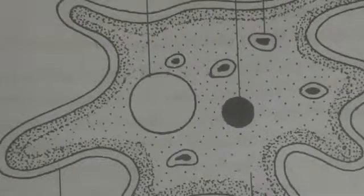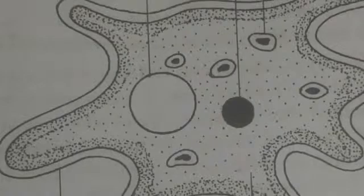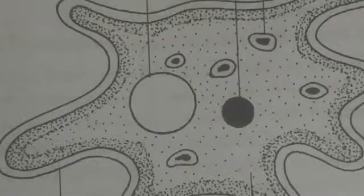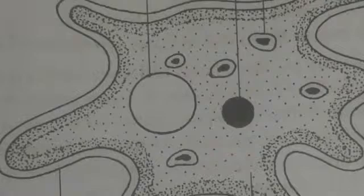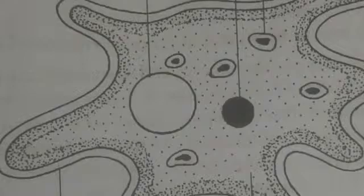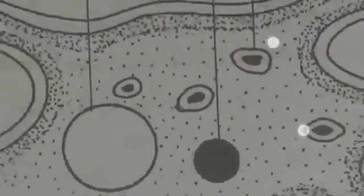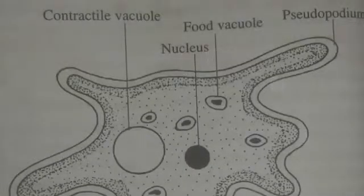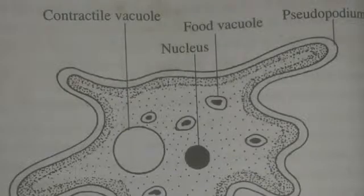The endoplasm contains a biconvex nucleus, endoplasmic reticulum, mitochondria, ribosomes, Golgi bodies, and several vacuoles, as well as crystals of reserve foods and oil glands. Two kinds of vacuoles are present: food vacuoles and contractile vacuoles.